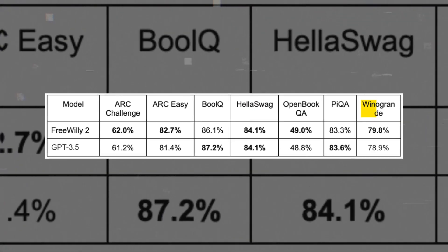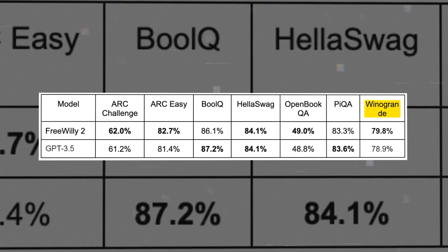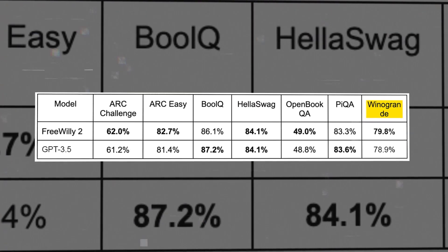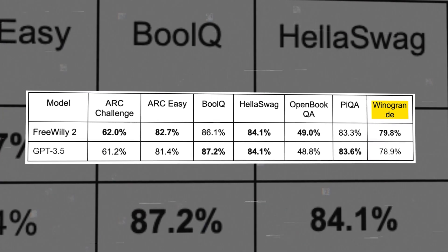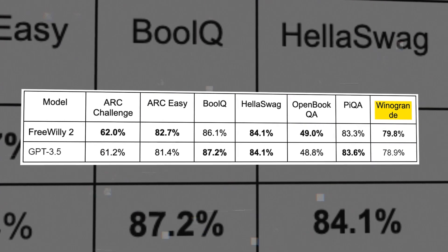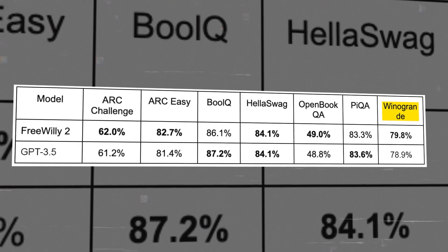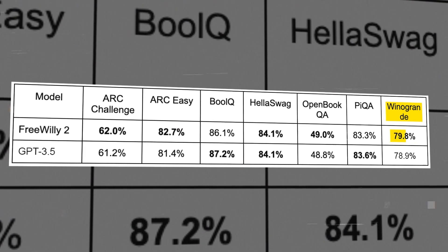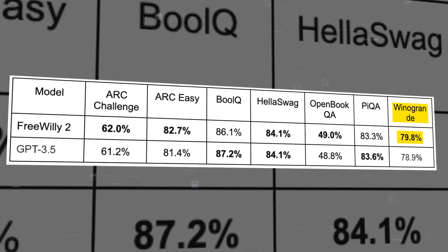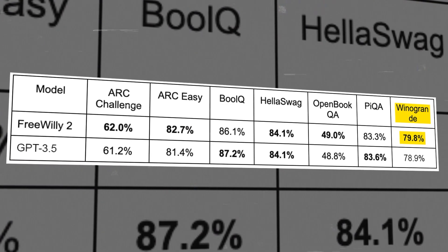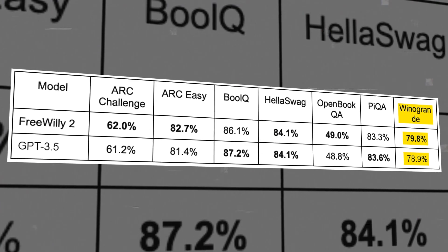On the Winogrande task, the model needs to figure out what a pronoun, like 'he' or 'she,' is referring to in a sentence. Free Willy 2 got it right 79.8% of the time, while ChatGPT was right 78.9% of the time.